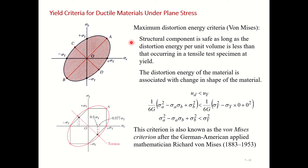The Von Mises criteria tells us that the structural component is safe as long as the distortion energy per unit volume is less than that occurring in a tensile test specimen. Just as with Tresca, we are comparing the actual state of stress — the actual machine component loading — with that of the tensile test specimen.